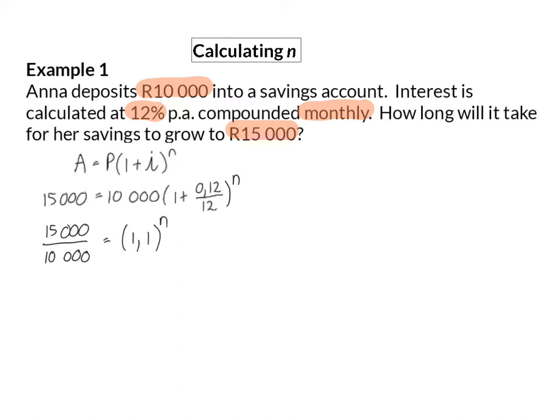Because n is in the exponent, it would have been ideal if we could get the base on both sides into the same value, but in this case, that is not possible. Any exponential equation can, however, be rewritten in log form. And that we do by taking the base value, which is 1.1, and keeping that as the base of the log. And this means n will then be equal to the log of 3 over 2, base 1.1.